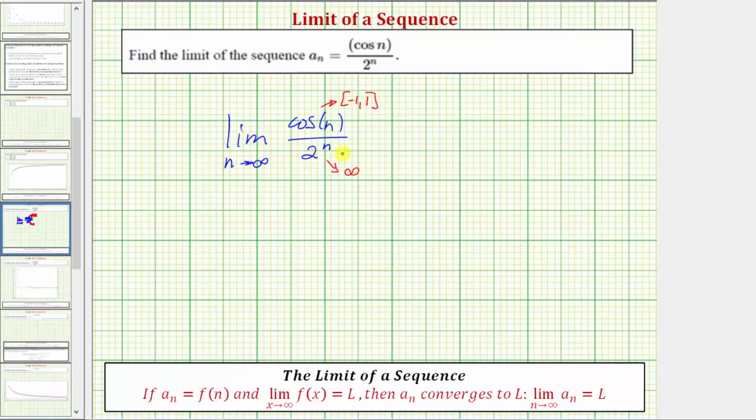So now we need to figure out what's happening to the value of this entire fraction if the numerator always has a value in the closed interval from negative one to one, and the denominator increases without bound. Well this fraction is going to approach zero from both the positive and negative side, since the numerator can be either positive or negative.